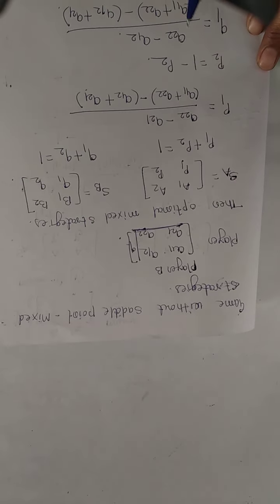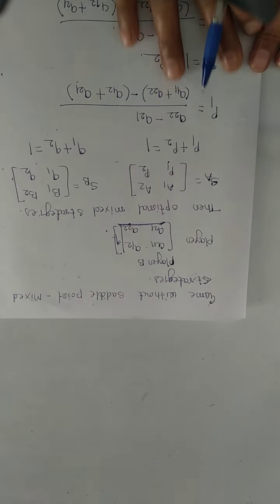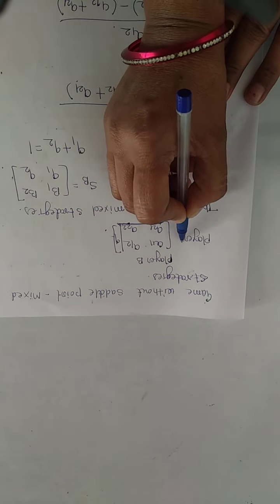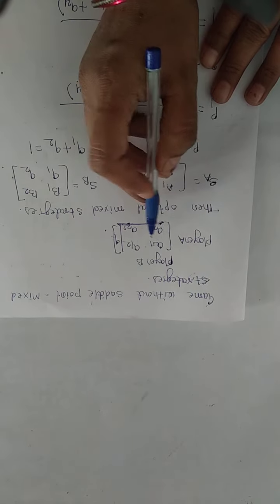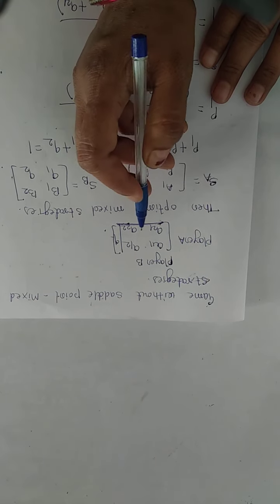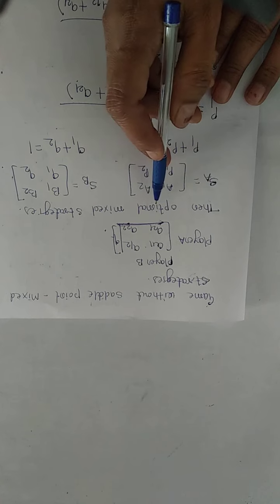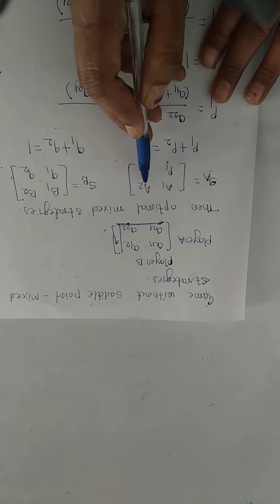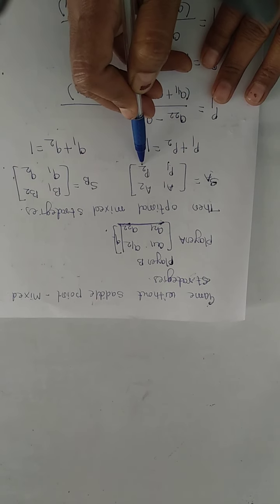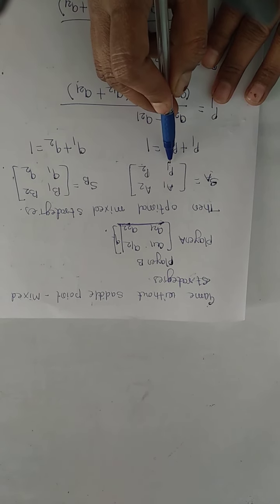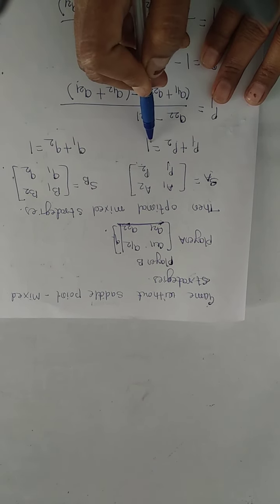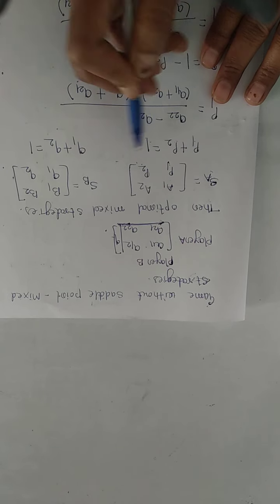Now we consider the game without a saddle point — meaning mixed strategy is used. The payoff matrix has entries A11, A12, A21, A22. The optimal mixed strategy for player A is SA equal to (A1, A2) with probabilities (P1, P2), where P1 plus P2 equals 1, representing 50% win and 50% loss.